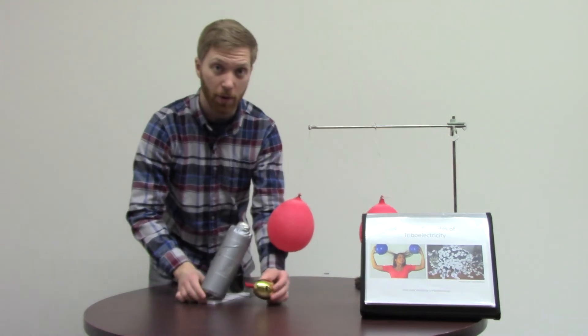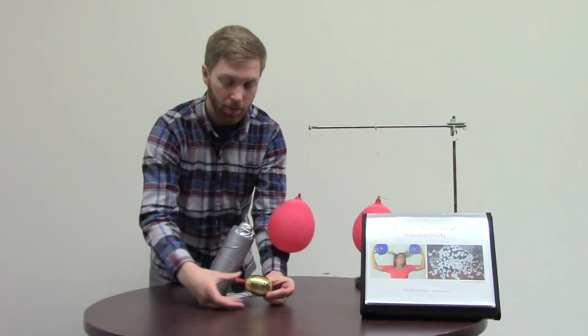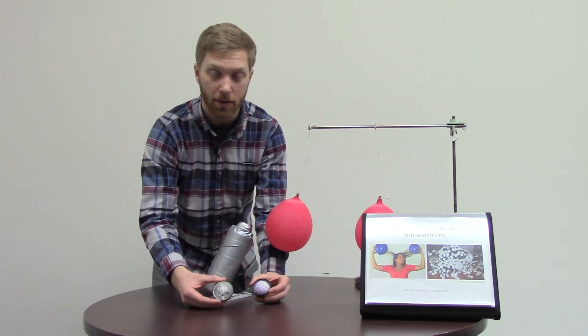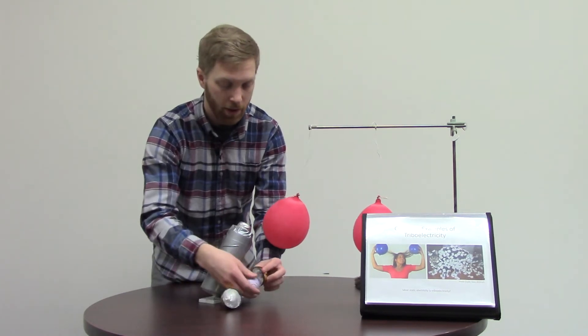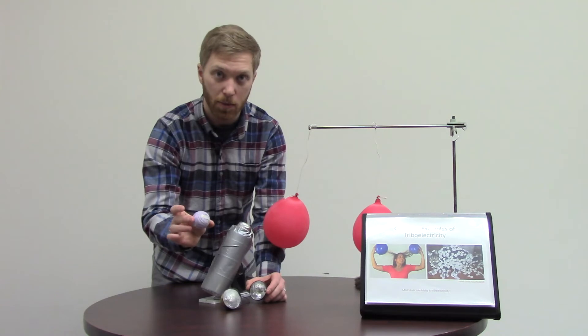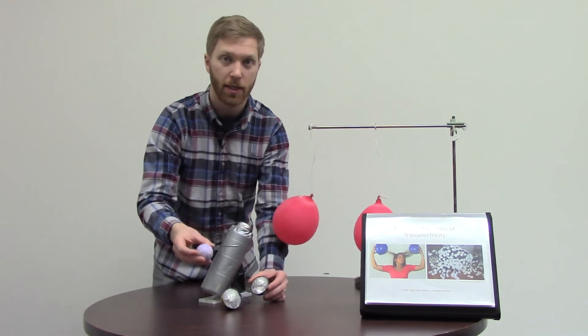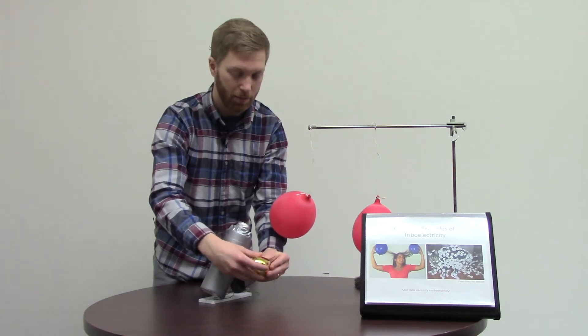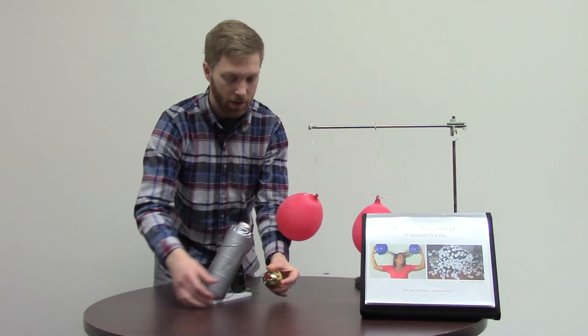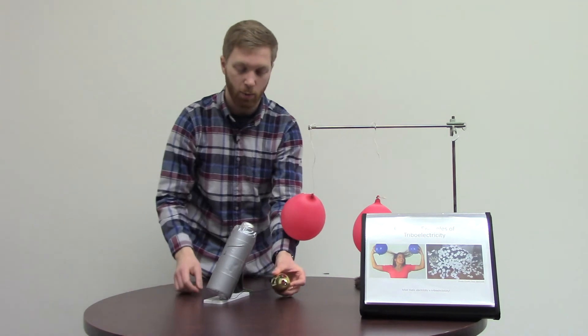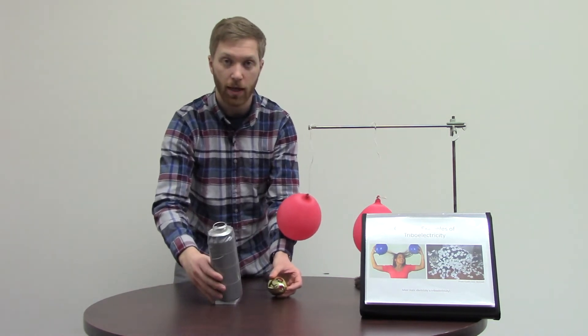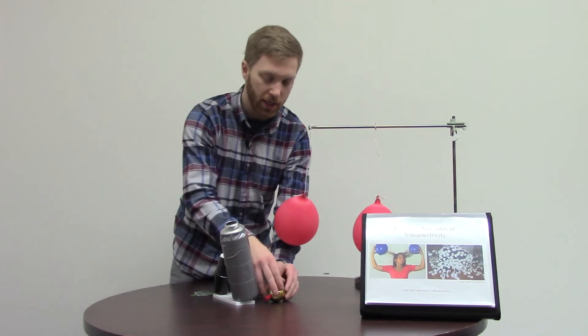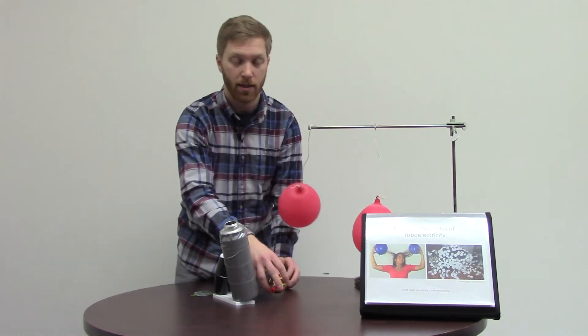So, this first triboelectric nanogenerator we have is made from a plastic egg. On the inside, we've lined it with some aluminum foil. And we have a large super ball that we've wrapped in some Teflon tape. Maybe you've heard of Teflon for a non-stick coating on your pots and pans. And then coming out of this egg, we have some wires that are attached to a light emitting diode, an LED. So, what I want you to do is take this egg and shake it and tell me what you see.